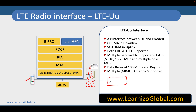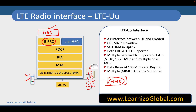We may also have additional communication between the UE and the core network, specifically the MME. This is referred to as NAS, which stands for Non-Access Stratum. All NAS messages are encapsulated within RRC messages between the UE and eNodeB, and the eNodeB forwards these messages on to the MME.